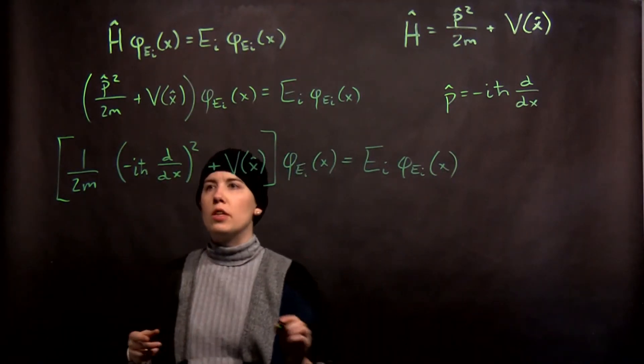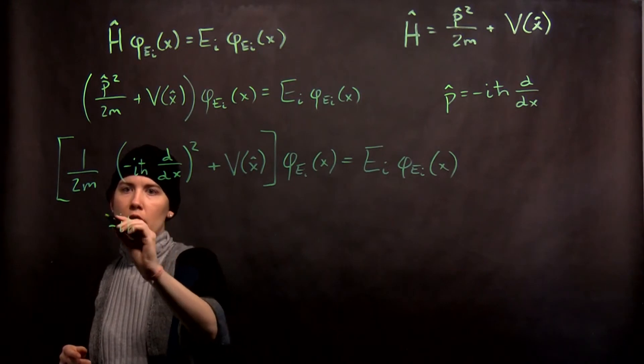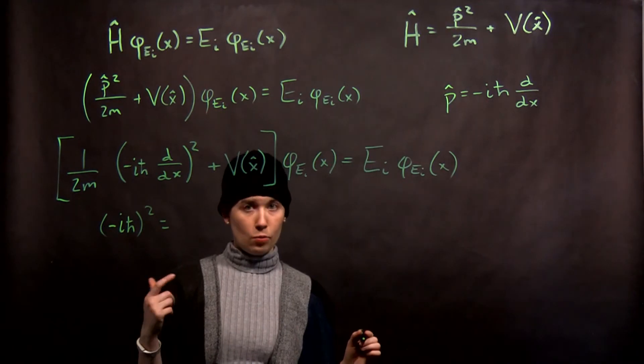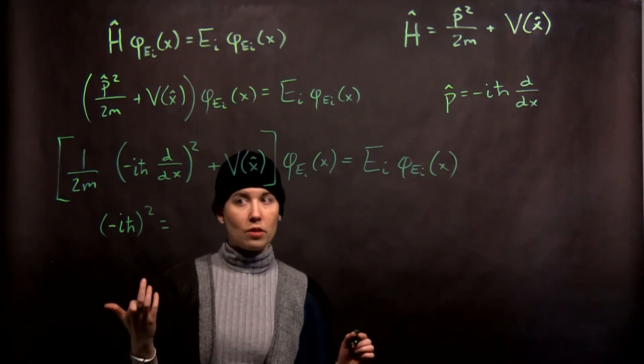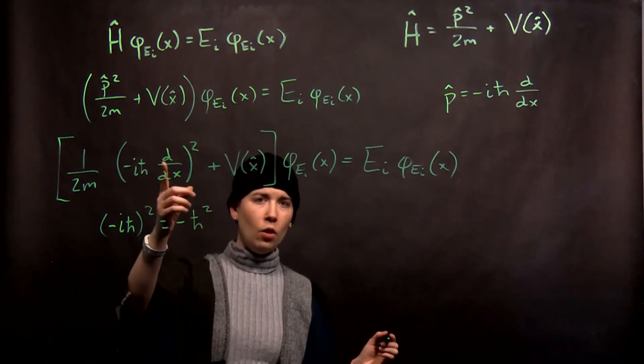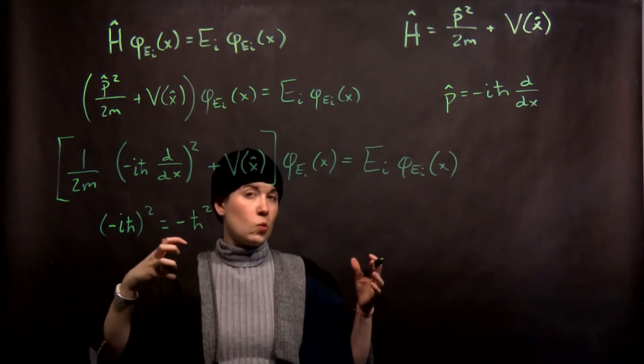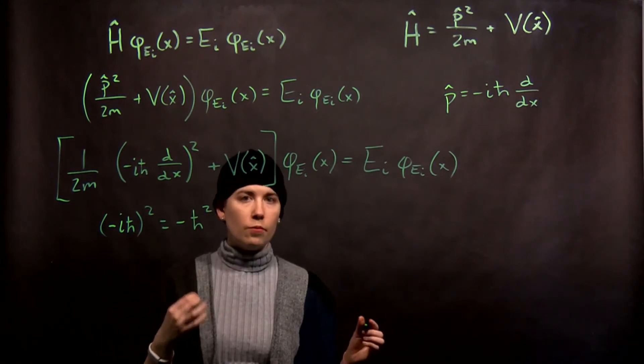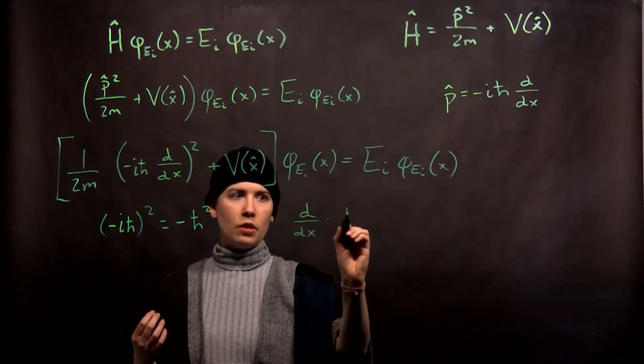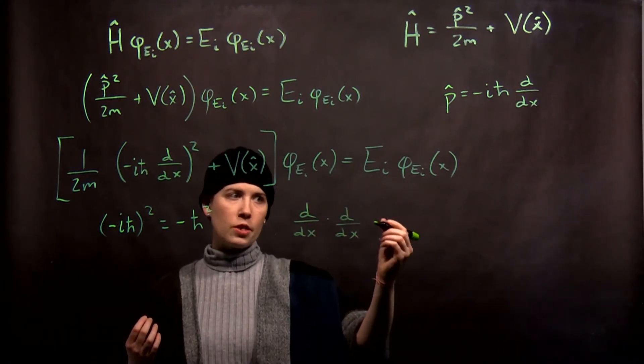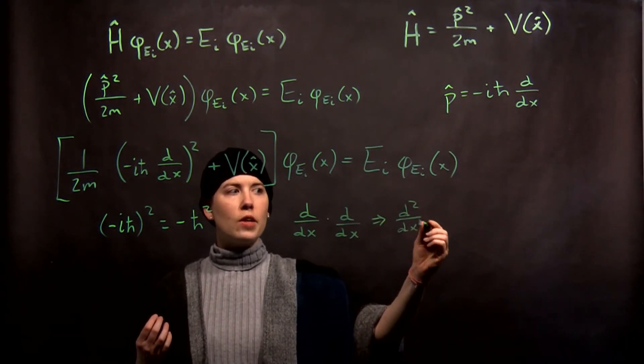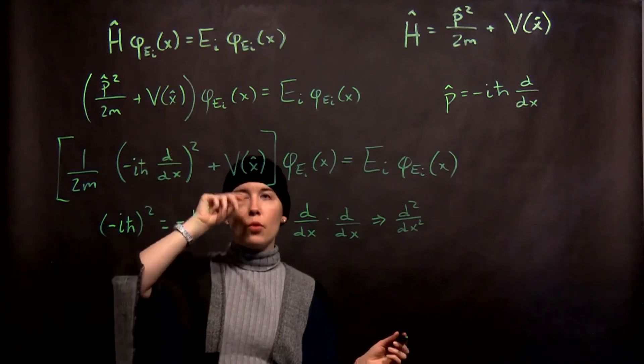So when we square this, the first part is easy. Negative i h bar squared, well negative times negative is plus 1, i squared is negative 1, so this is just negative h bar squared. What is d dx squared? Well this is where it's helpful to think about it as an operator. So that is d dx, d dx applied to some function, that's going to give you just the second derivative. So that's what's going to happen here.